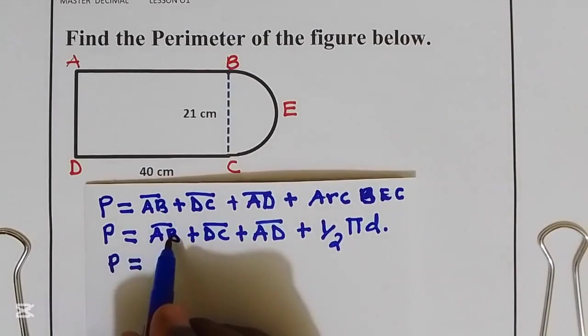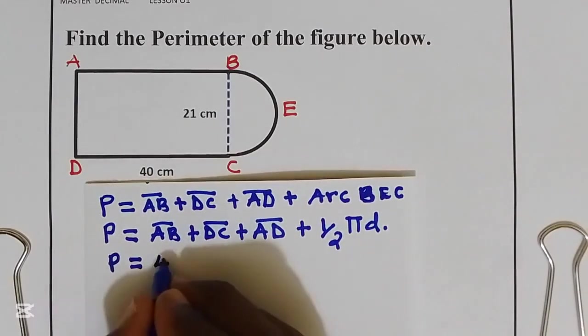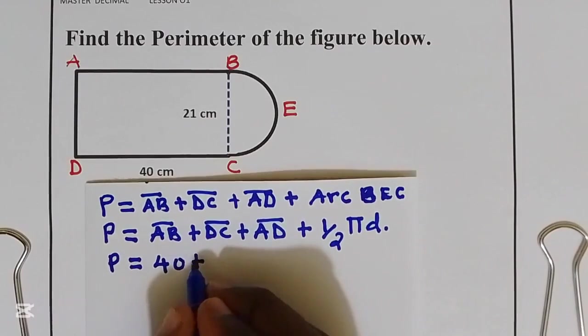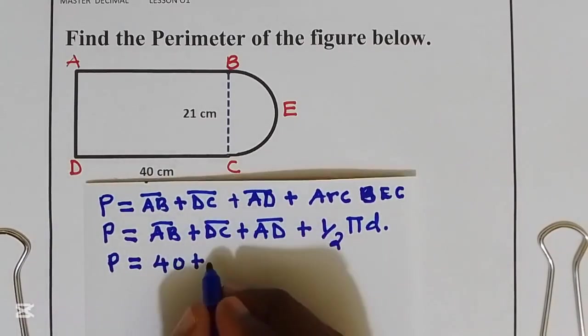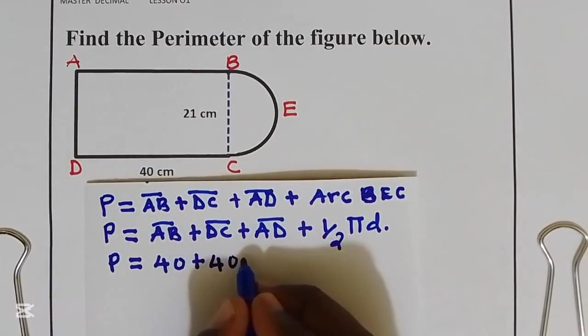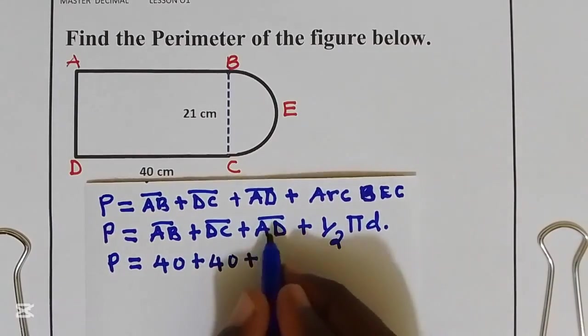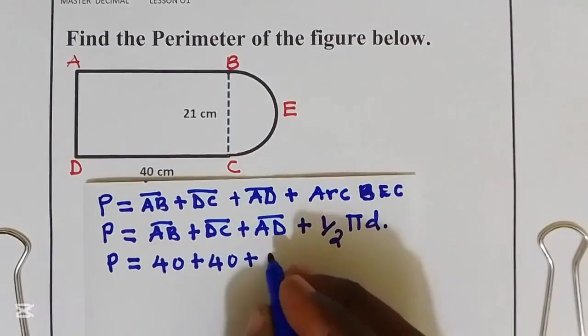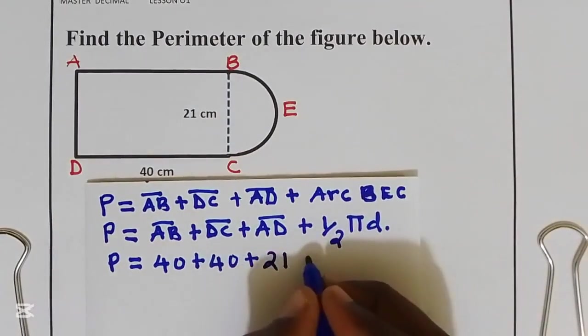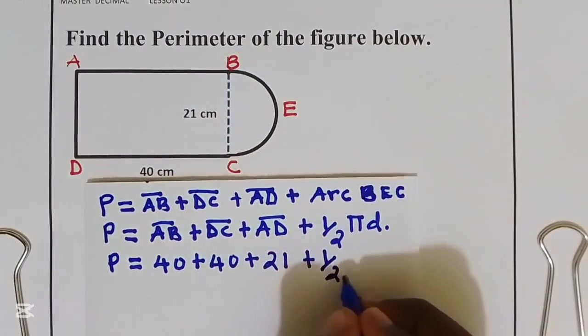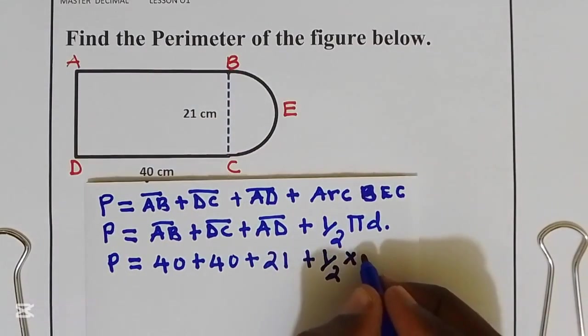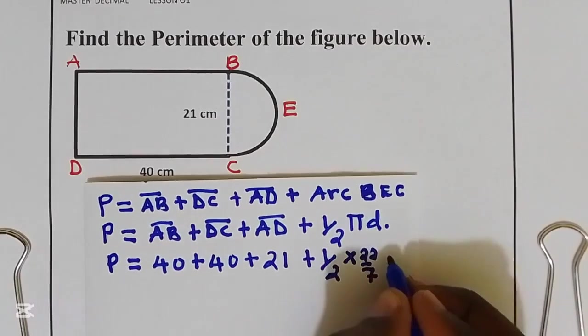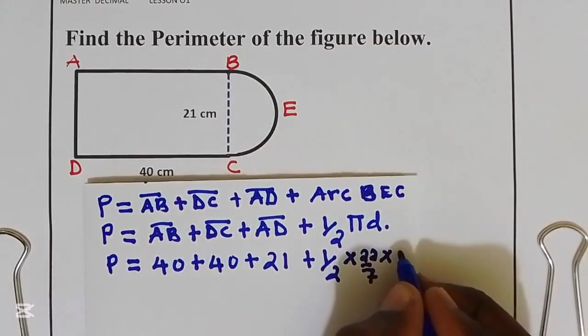AB is equal to 40 centimeters plus DC also is 40 centimeters plus AD is 21 centimeters plus a half multiply by pi. I will use pi as 22 over 7, multiply by D which is 21.